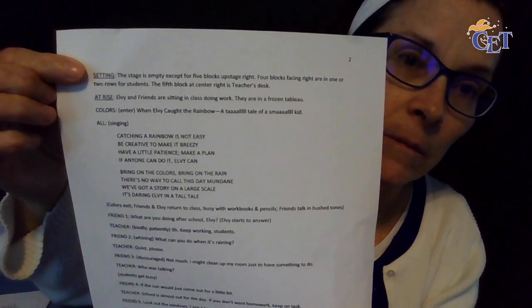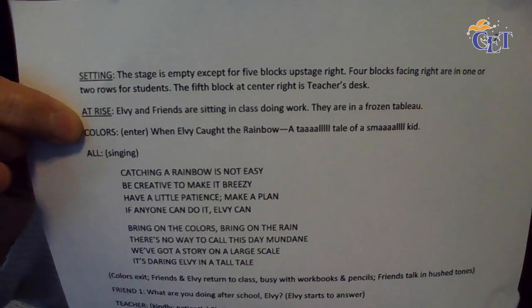Also, I wanted to show you this: SETTING. Notice the caps and the underlining. It says 'the stage is empty except for five blocks upstage right. Four blocks facing right are in one or two rows for students. The fifth block at center right is teacher's desk.' And then it has AT RISE. AT RISE means when the curtain opens — if there is no curtain, it just means at the beginning of the show, here's what's going to happen right then. AT RISE: Elvie and friends are sitting in class doing work. They are in a frozen tableau, which means they're sitting there looking like they're ready to do something.